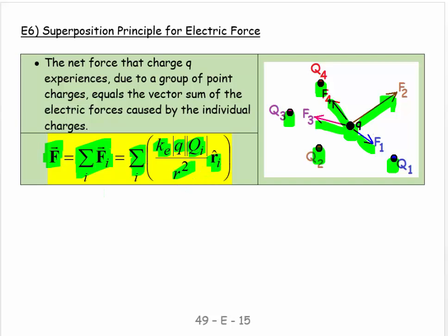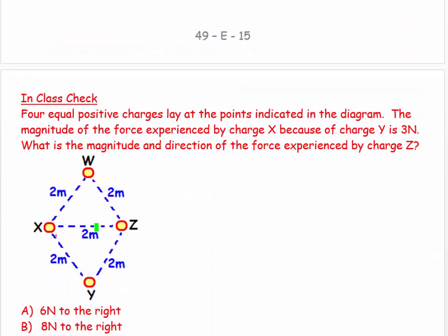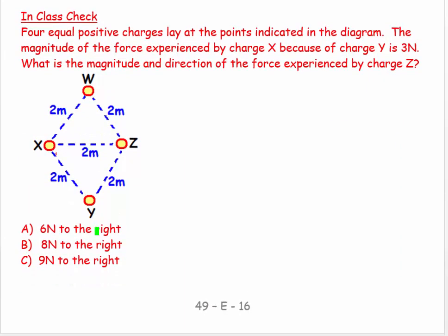Let's look at a good example. It's a classic example you see in a whole bunch of physics books because it brings in vector trig. This basically says four equal positive charges.